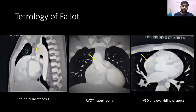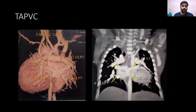Tetralogy of Fallot (TOF) is characterized by infundibular stenosis, right ventricular outflow tract hypertrophy, VSD, and overriding of the aorta. It is the most common congenital cyanotic heart disease.